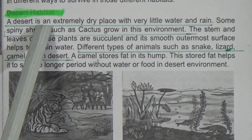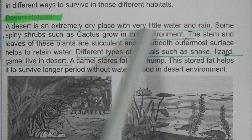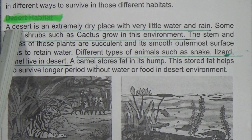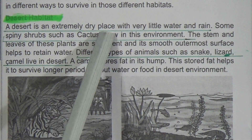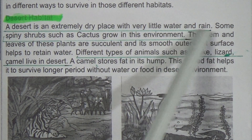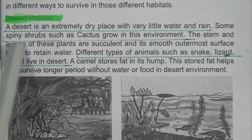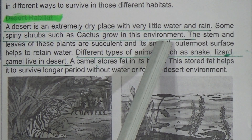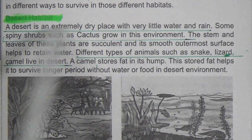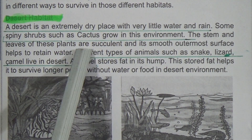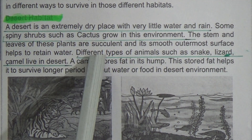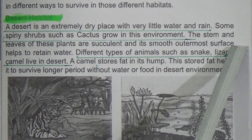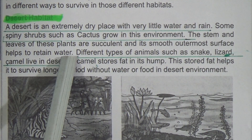Desert habitat: a desert is an extremely dry place with very little water and rain — underline this line. Some spiny plants such as cactus grow in this environment — underline this line. The stem and the leaves of these plants are succulent, and the smooth outermost surface helps them retain water.